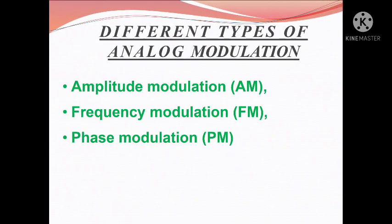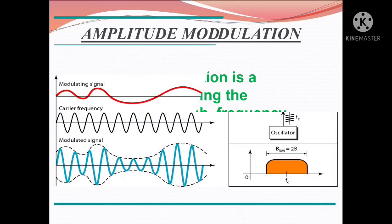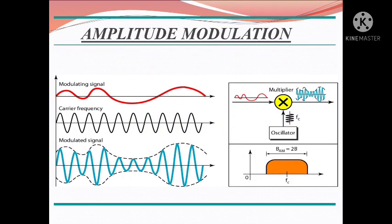There are three types of analog modulation techniques: amplitude modulation, frequency modulation technique, and phase modulation technique. Amplitude modulation is the process of changing the amplitude of a high frequency carrier signal in proportion with the instantaneous value of the modulating signal.